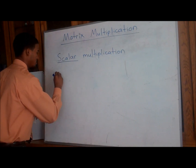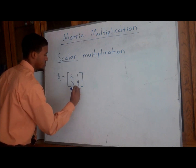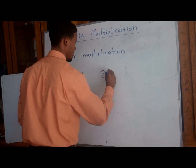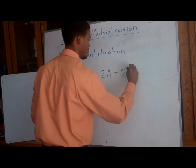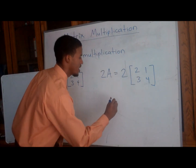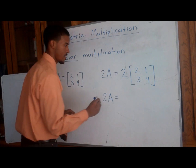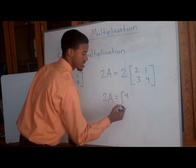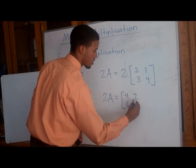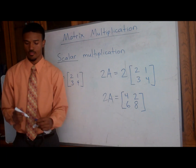The word scalar basically means a constant. So we're taking a constant and multiplying it times a matrix. Let's do this example: if matrix A is the 2 by 2 matrix [2, 1 / 3, 4], and we multiply a scalar: 2 times matrix A. We're just going to have that 2 multiplied times the entire matrix — 2 times each entry. So 2×2=4, 2×1=2, 2×3=6, and 2×4=8. So 2 times matrix A equals [4, 2 / 6, 8].